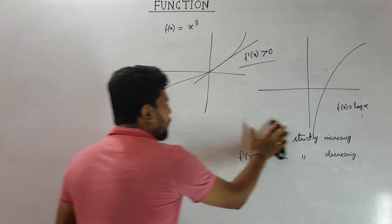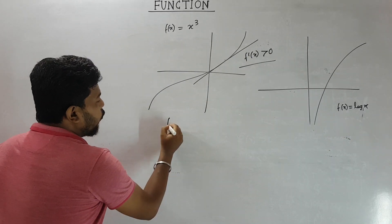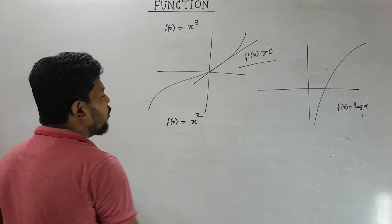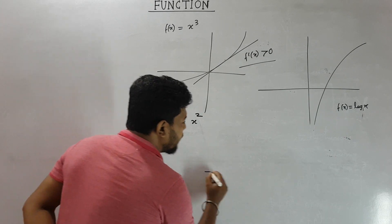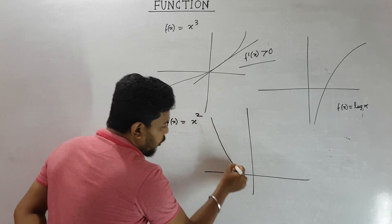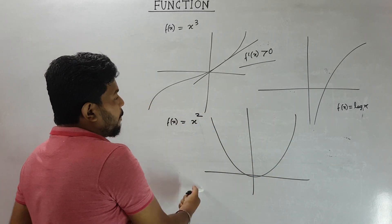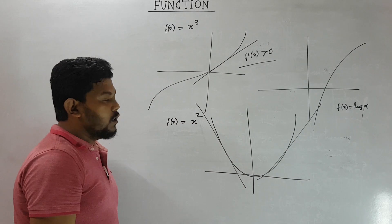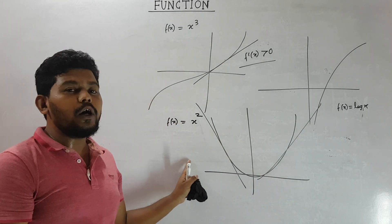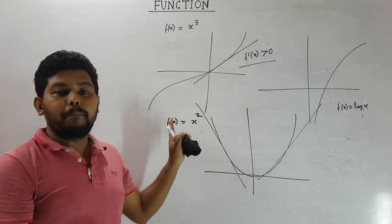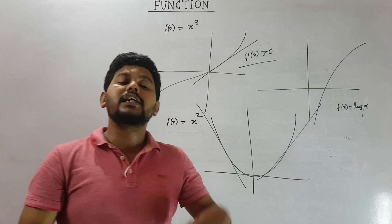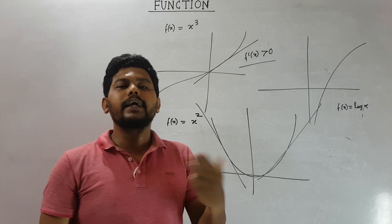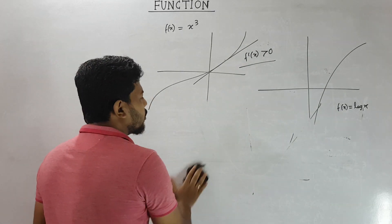For a many-one function, the function is neither strictly increasing nor strictly decreasing. For example, f(x) = x² is decreasing from −∞ to 0 and increasing from 0 to ∞, so it is neither strictly increasing nor decreasing — it is an example of a many-one function.